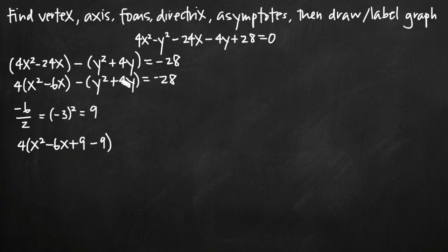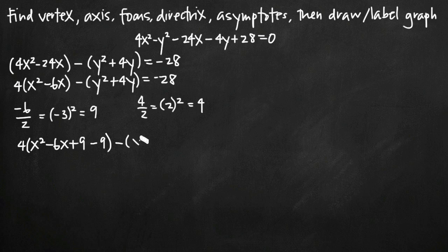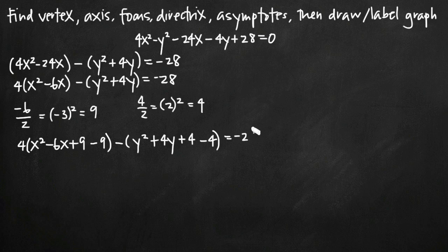Now for y, we take the constant coefficient on our first-degree y term, which is 4. We divide by 2 to get 2, then square it to get 4. So we're adding 4 to get minus y squared plus 4y plus 4. Because we added 4, we also have to subtract 4, and we get equals negative 28.